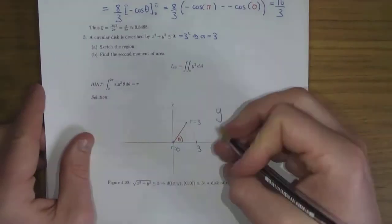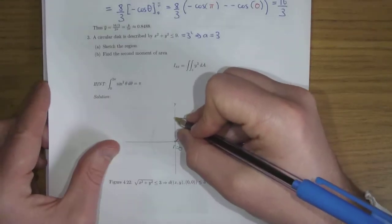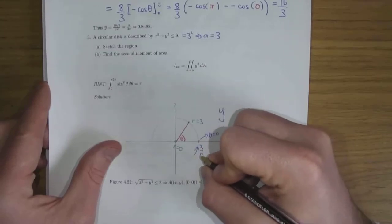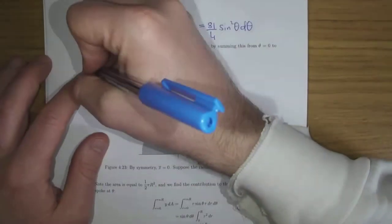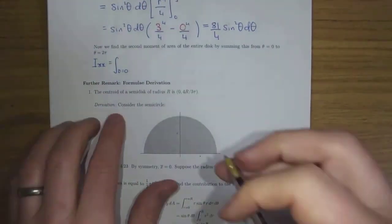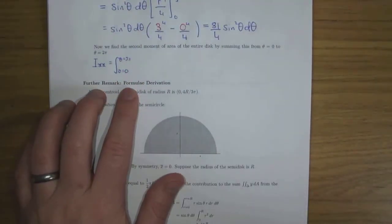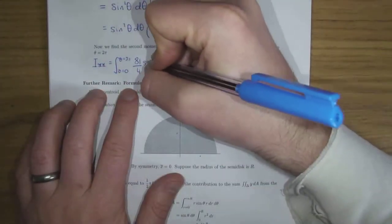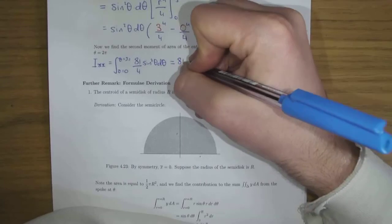Now we add up all the spokes from θ equals zero, through π/2, π, 3π/2, all the way back to θ equals 2π. The second moment of area of the full disk is the integral from θ equals zero to θ equals 2π of the second moment of area of a spoke, which is 81/4 sin squared θ dθ.